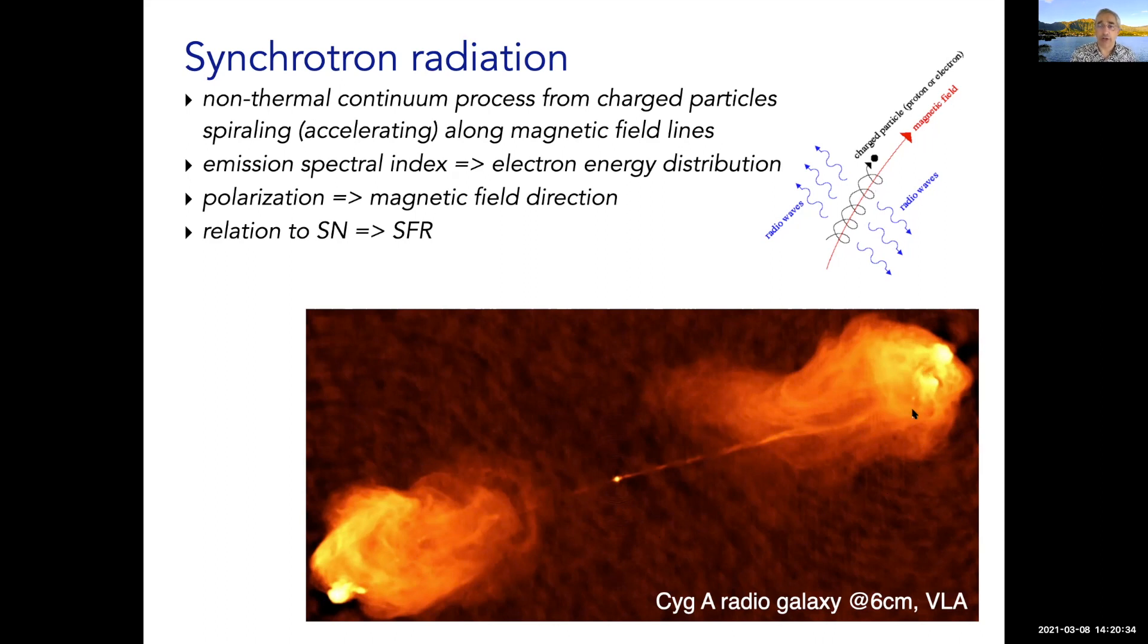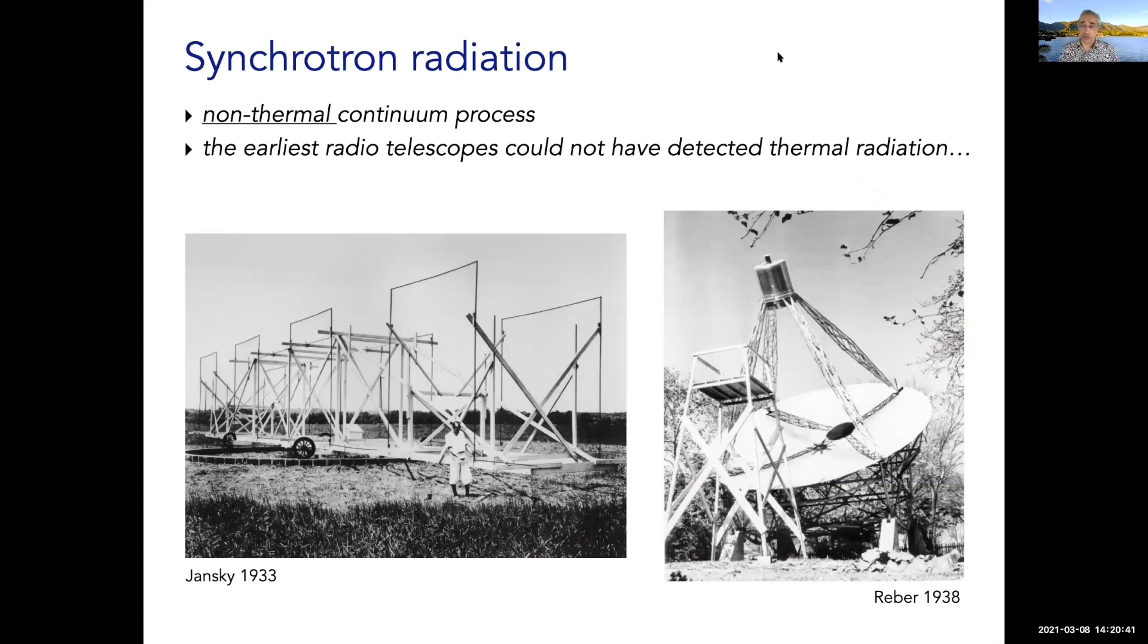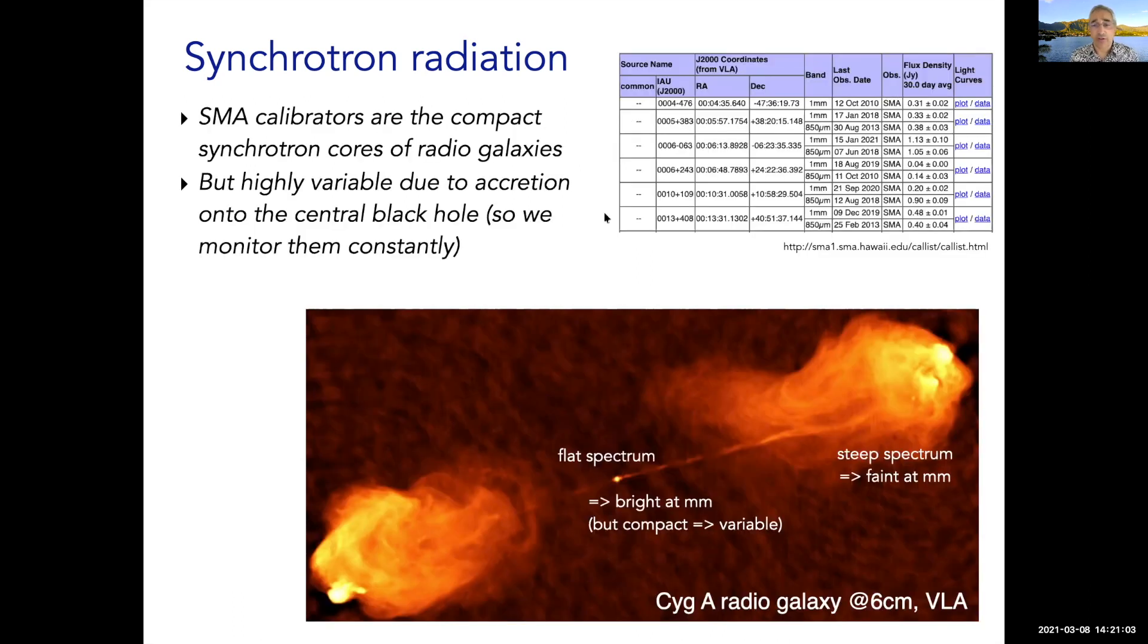Synchrotron radiation is very strong at meters and more. Because it has this strength, this non-thermal process creates very strong emission at long wavelengths. That was the reason why the first radio telescopes, the pioneers Jansky and Reber, were able to detect radiation. The thermal radiation itself would have been far too weak for these telescopes to detect. The strength is very useful because we use these sources as calibrators for the SMA. We're using typically millimeter wavelengths. It is the AGN that we see, not so much the radio lobes, which have a very steep spectrum.